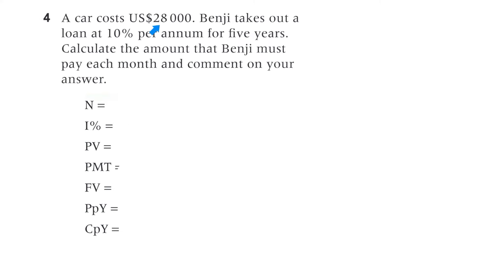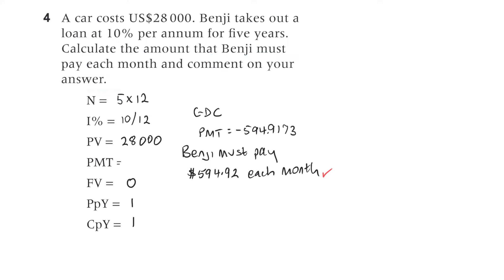Question four. A car costs $28,000. Benji takes out a loan at 10% per annum for five years. Calculate the amount Benji must pay each month. We keep periods and payments as one. N is 5 times 12, which is 60. The interest rate is 10% per annum divided by 12 for the monthly rate. The present value is $28,000. The calculator gives a payment of minus 594.92 dollars — negative because he is paying the bank. Benji must pay $594.92 each month.